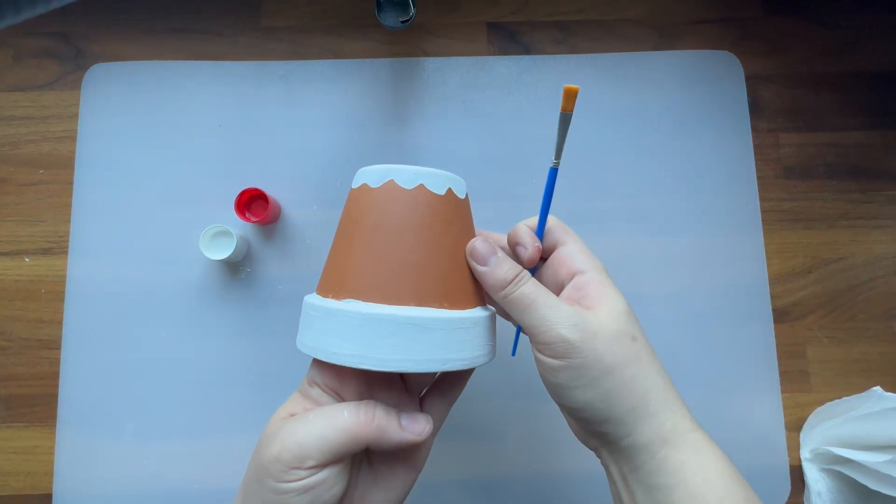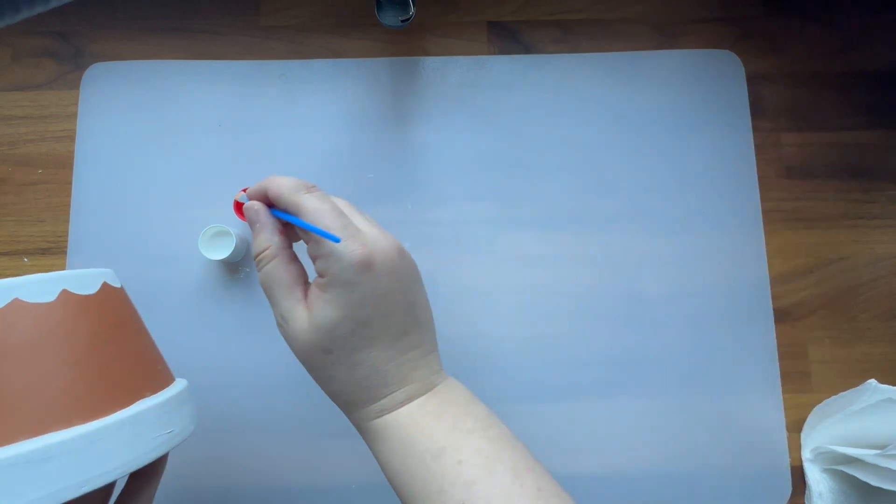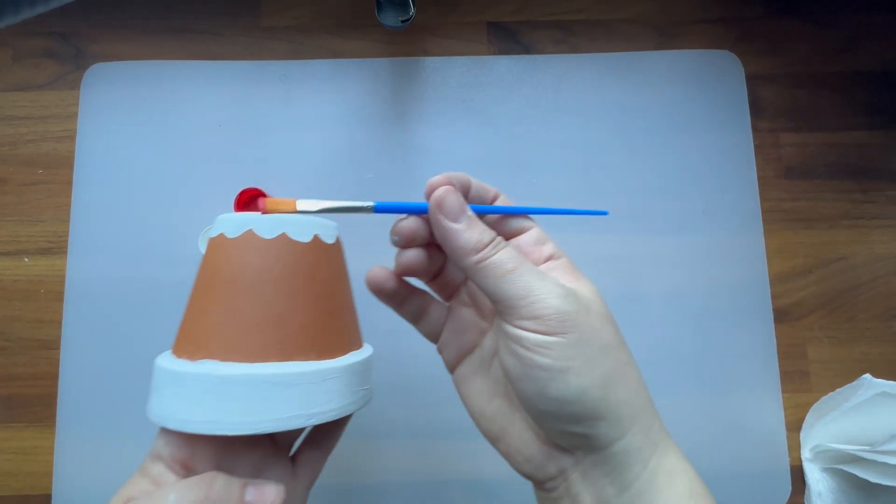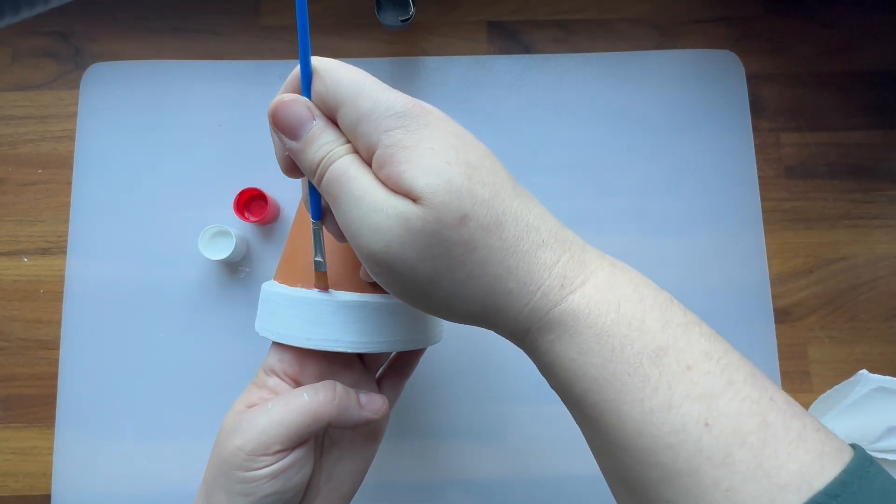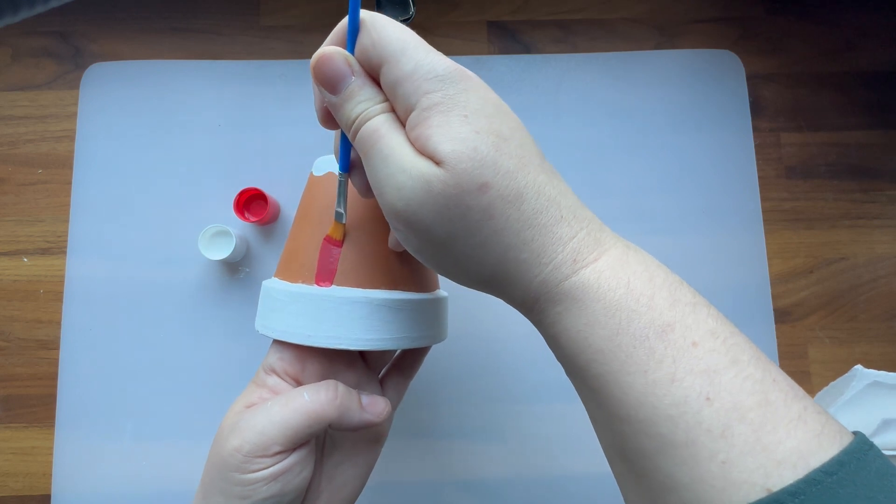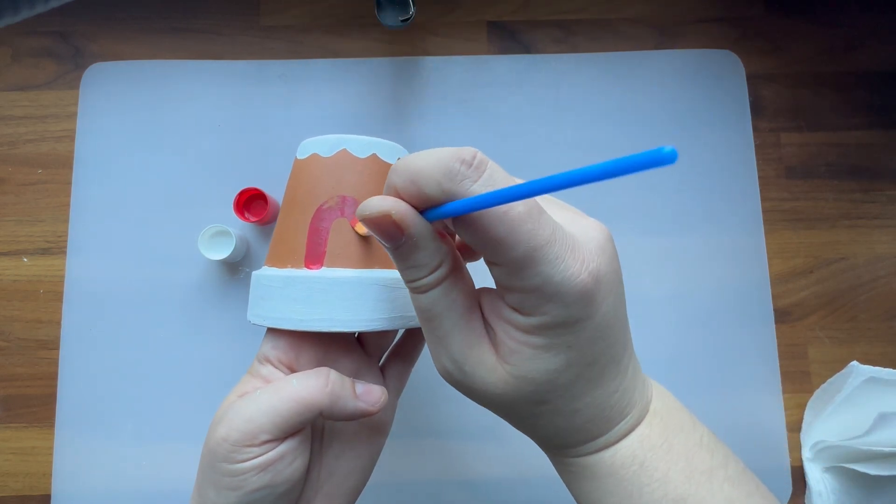Next, I'm going to give my gingerbread house a little round door. Make sure that you rinse out your paintbrushes before you switch colors, but here I'm just making an upside-down U and then I'm going to paint it in.